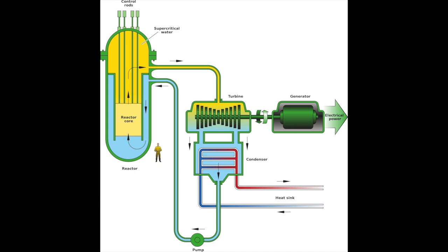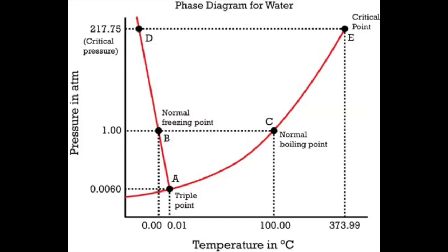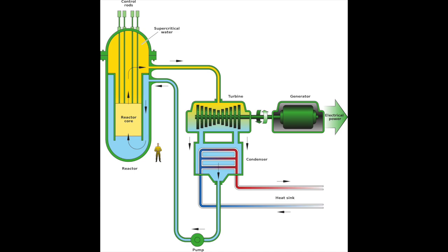More conventional is the Supercritical Water Cooled Reactor or SCWR, which is similar to a regular boiling water reactor or BWR, except that the water coolant is kept in a supercritical state, at which the difference between the liquid and gas phases becomes indistinguishable. This eliminates the need for much of the equipment required in PWR steam turbine systems,